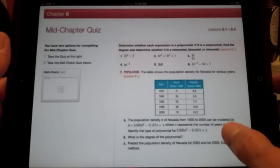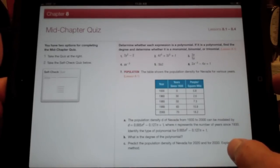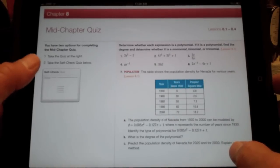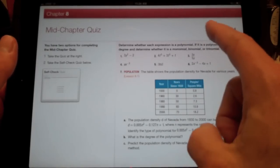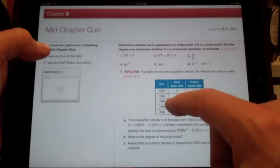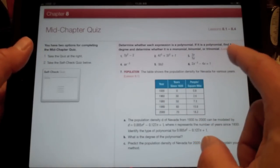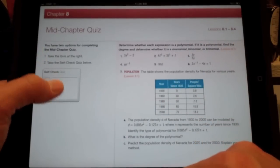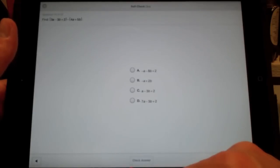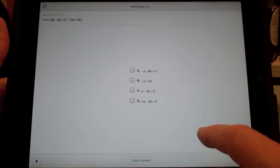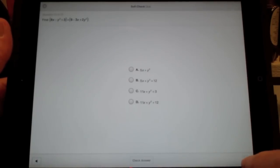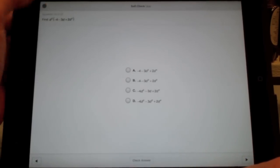The mid-chapter quiz is kind of nice because it allows me to actually take a quiz within the book itself. It says right here, you have two options for completing the quiz. Take the quiz at the right, which you could do right here. And then you could also take this self-check quiz, which is kind of nice. It's A, B, C, D, and I can check my answer. It gives me the question. In this case, there are 37 possible questions, and I can go through each one of them for practice, which is really nice.